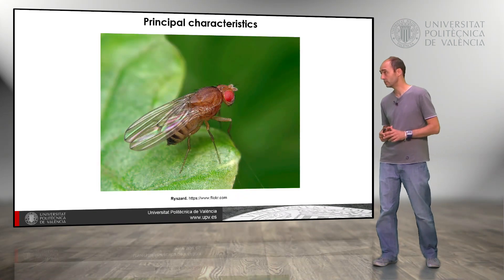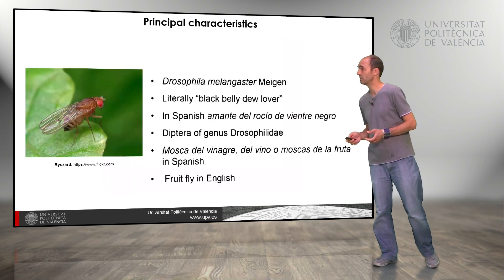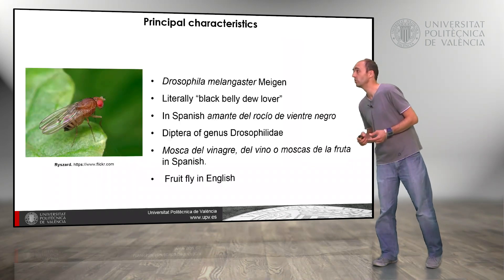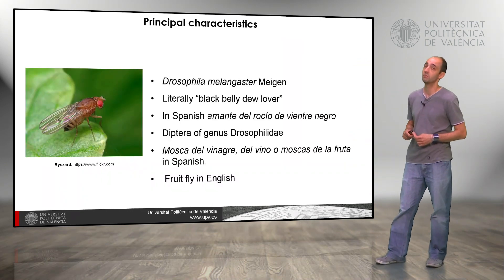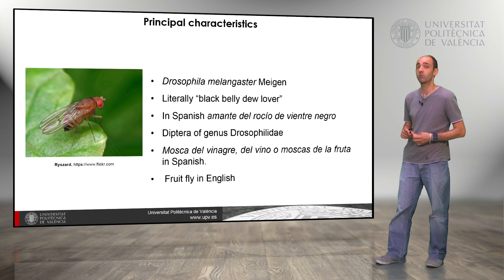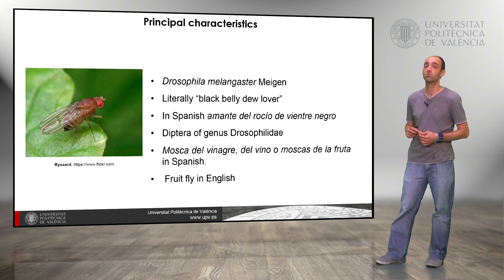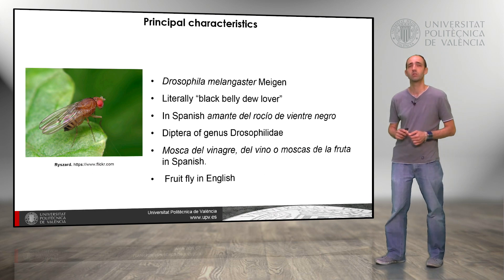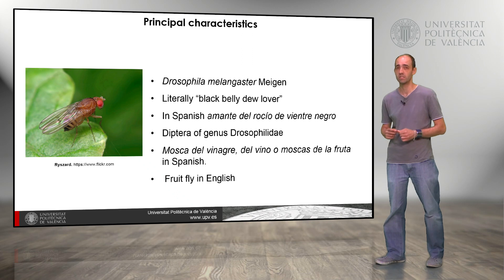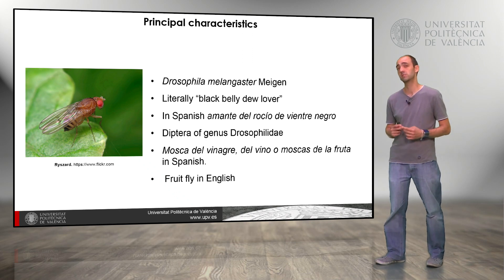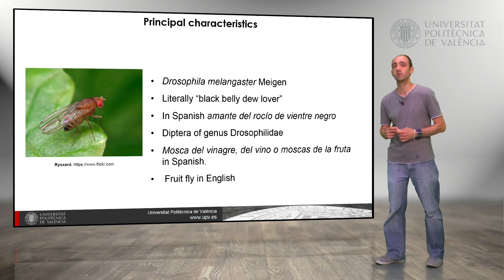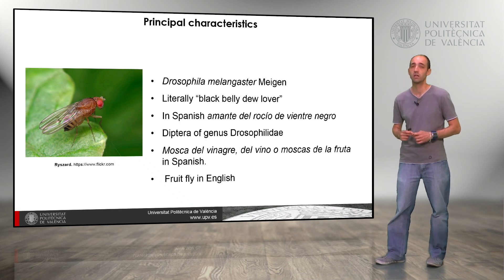Drosophila is an insect, as we can see in this picture. Its Latin name is Drosophila melanogaster, which means blackberry dew-lover, and in Spanish it is 'amante del rocío de vientre negro.' It is a diptera of the genus Drosophila, called in Spanish 'mosca de vinagre del vino' or 'mosca de la fruta,' and in English, fruit fly.